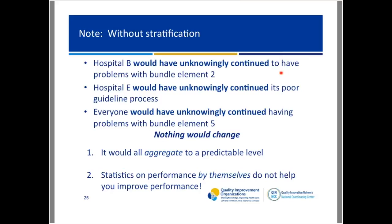If you look at element five of the bundle — another big number — you look across and don't see any screaming special cause. Element five of the bundle is a problem for this entire health system. The answer isn't clear, but it's very clear you don't just say 'we're going to make you more accountable' — the system is perfectly designed to have trouble with bundle element five. It's going to take a systemic intervention to fix this. If we hadn't stratified and just continued to look at aggregate performance, statistics on performance don't help you improve performance.